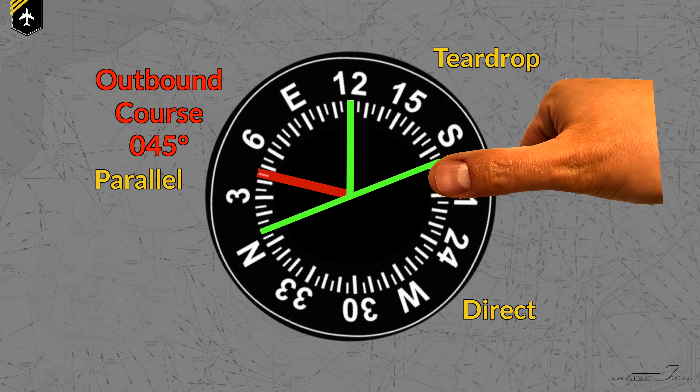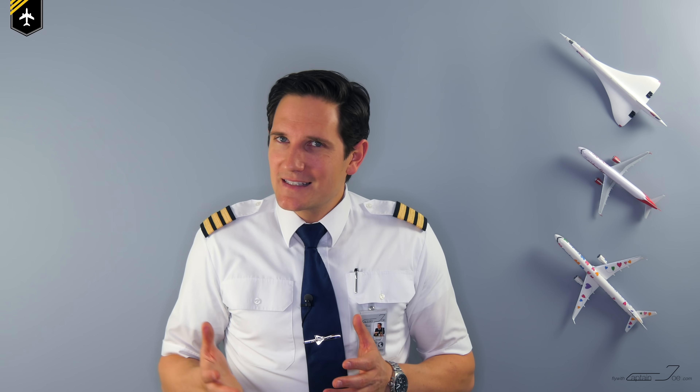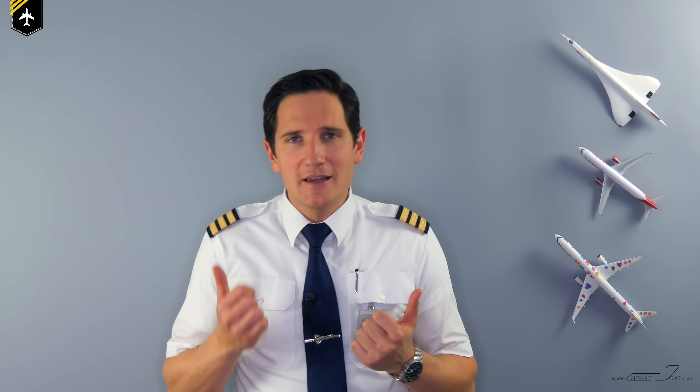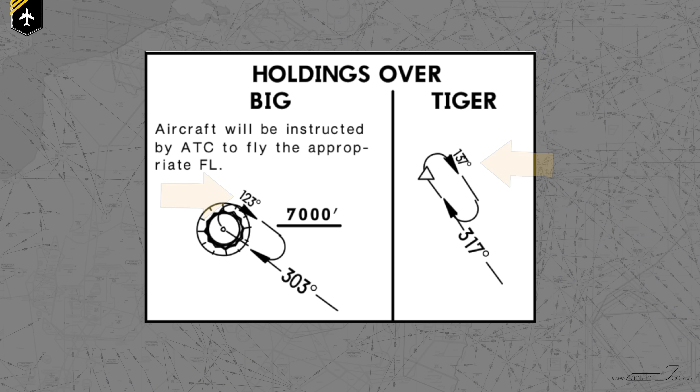In our case it's a parallel entry — it doesn't get any simpler than that. The best thing about this technique is that in the plane you only need to figure out the outbound course and whether it's a left or right turn holding to use your thumbs accordingly. If you're flying a published holding presented in a Jeppesen chart, the outbound course is even published in the chart, making things even easier.